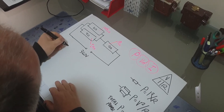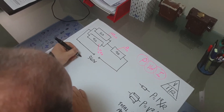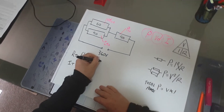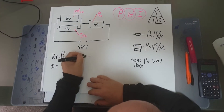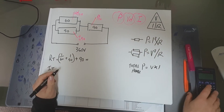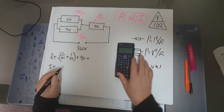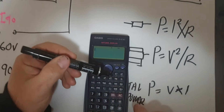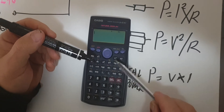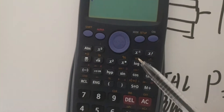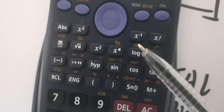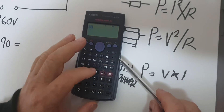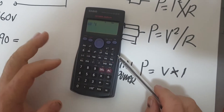To find resistance total we calculate one over 60 plus one over 90, then add the 90 ohms to get our total. On my Casio calculator — the most common one — there's an x⁻¹ key, the one-over-x button. I'm going to enter 60, then press x⁻¹ to get 1 over 60.